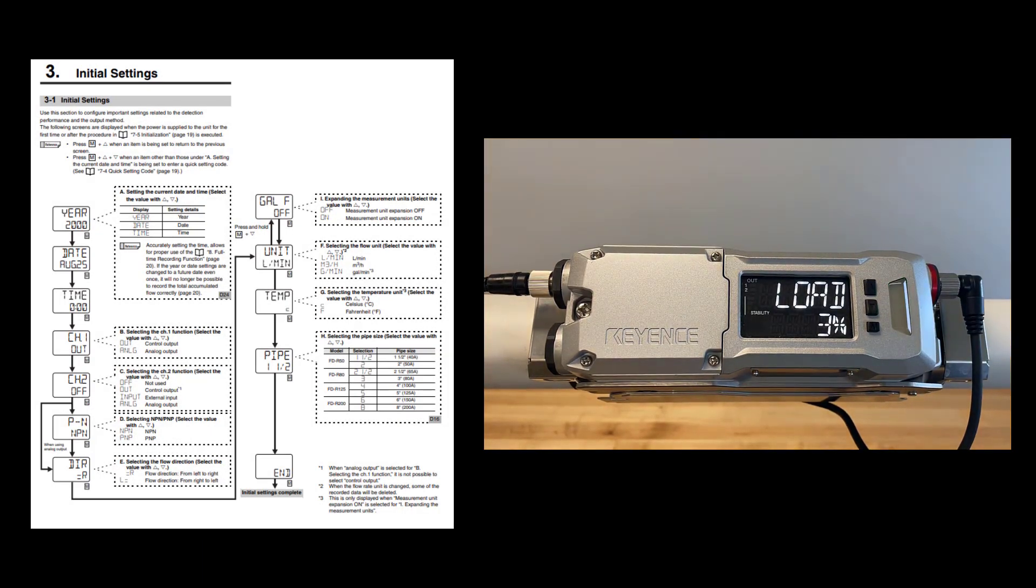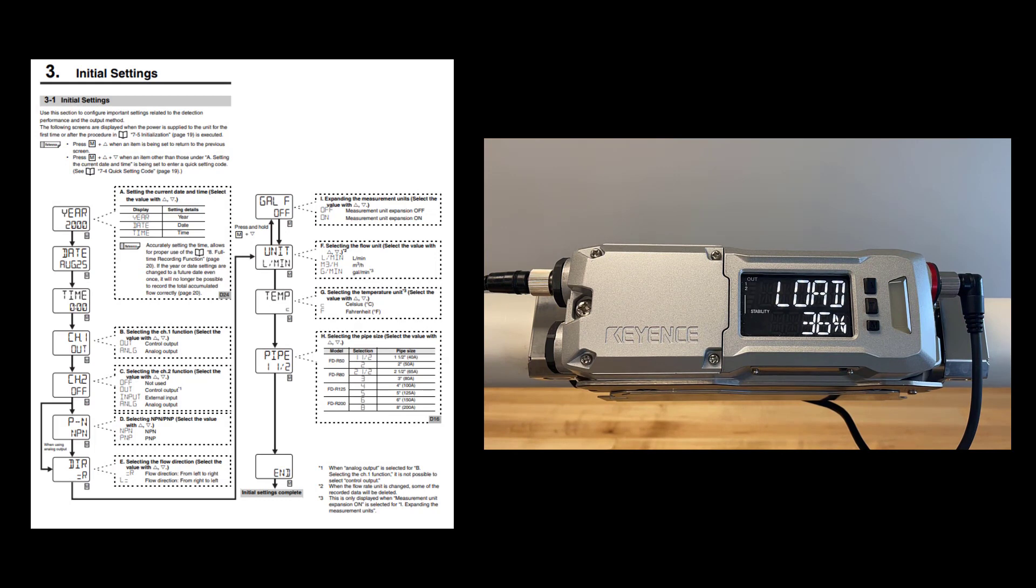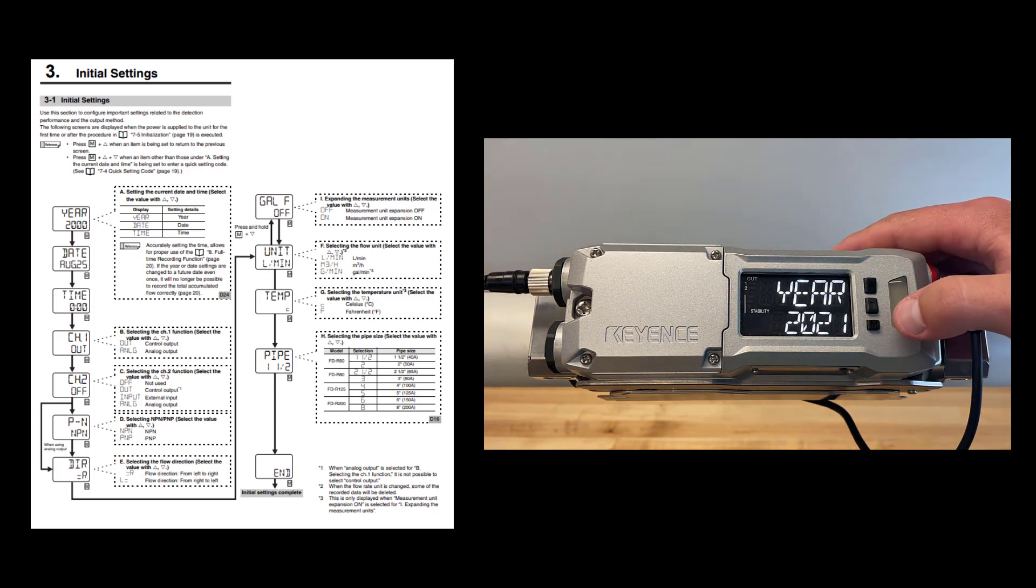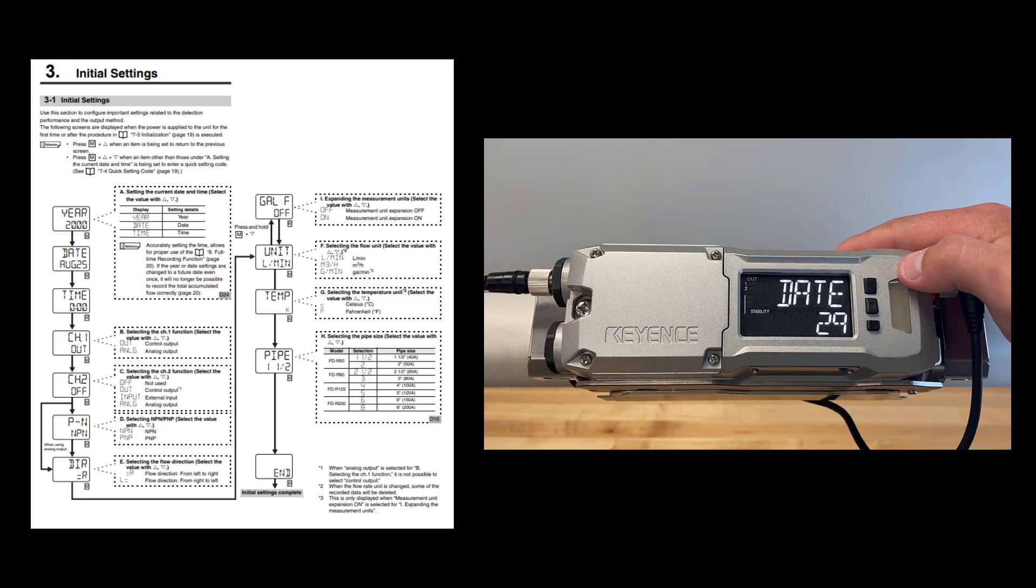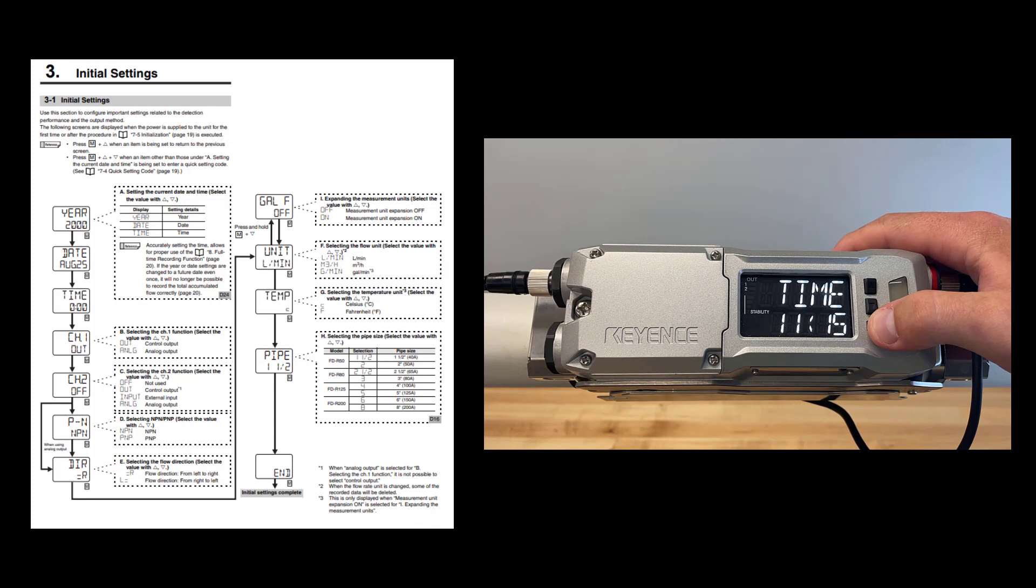Once power is applied to the FDR unit, you will be greeted with the initial settings menu. The first couple options will be referencing the year, month, day, and time that the unit should be in, so that it can properly record data to the full-time recording function.